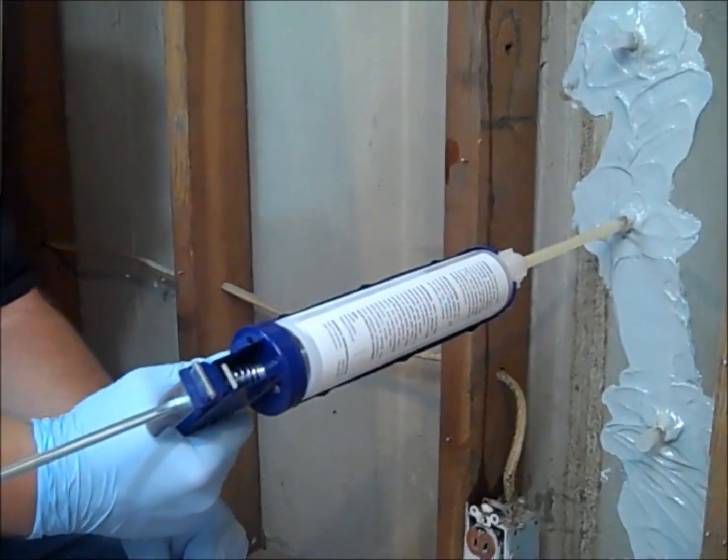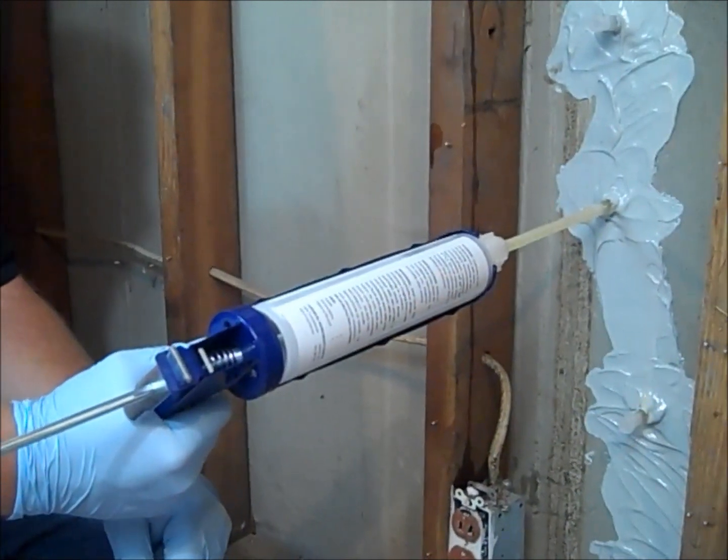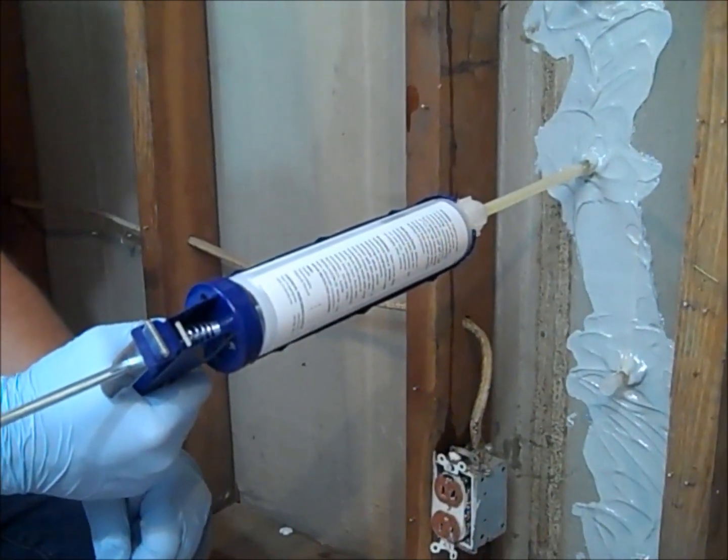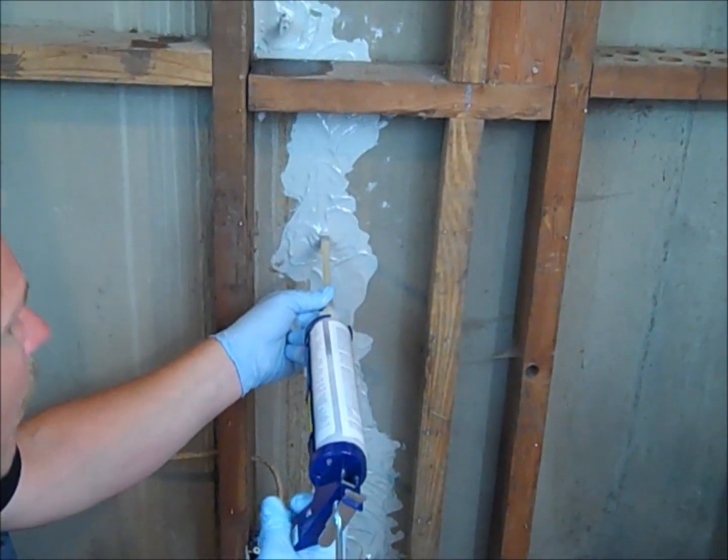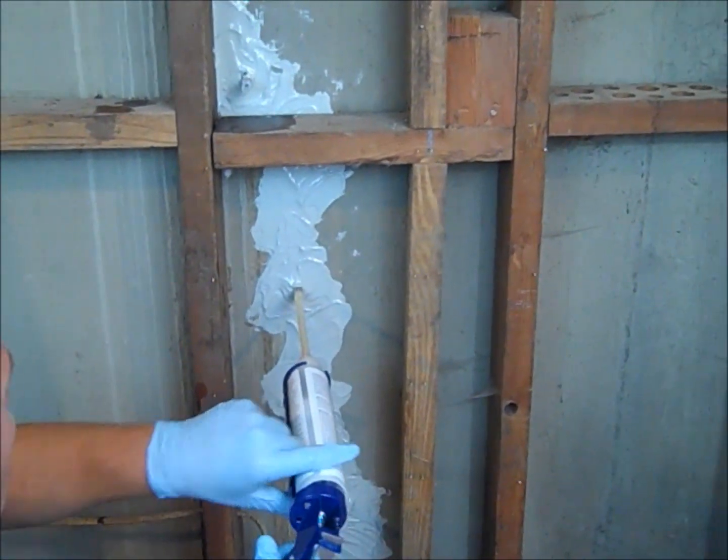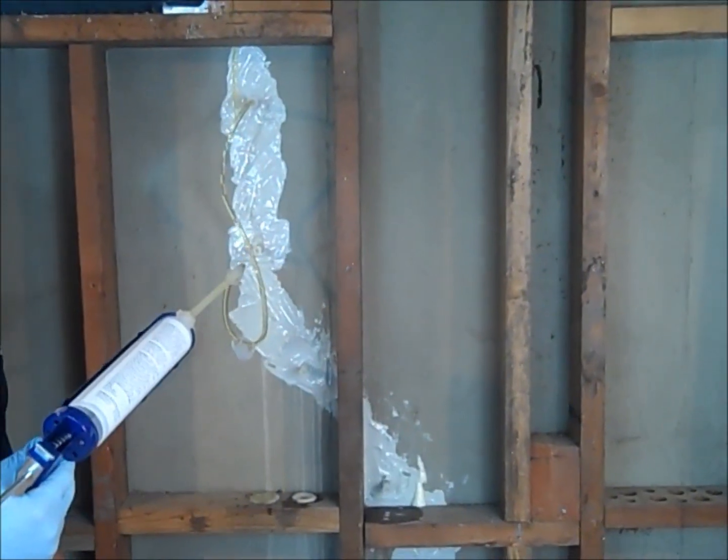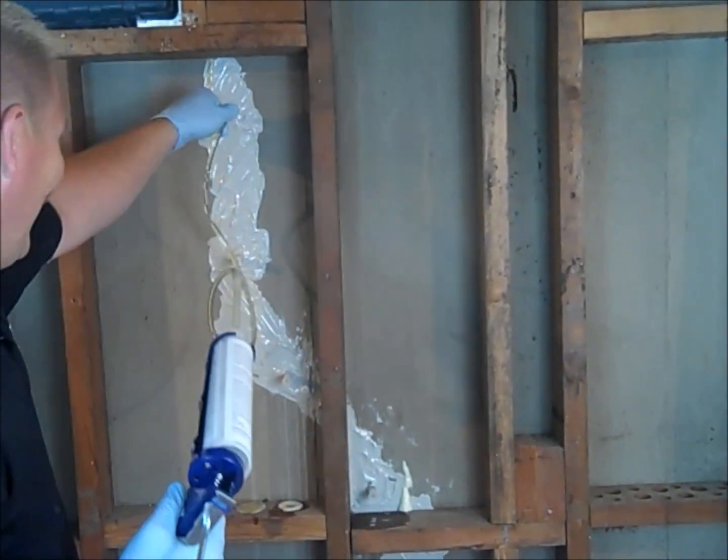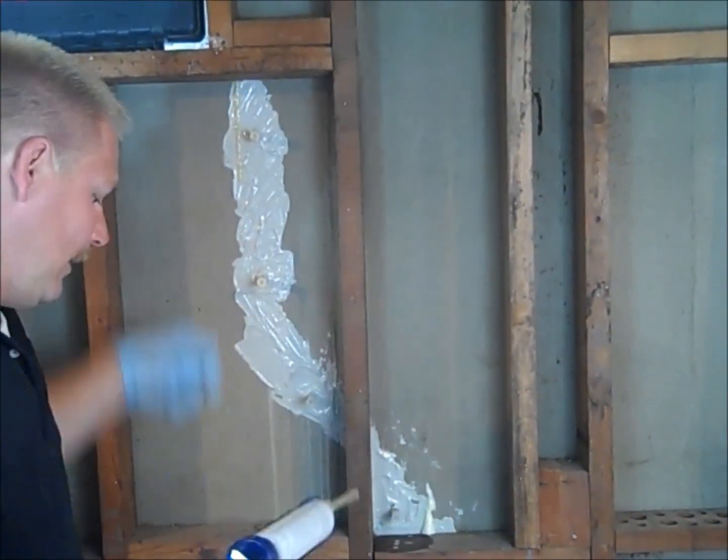12 to 24 hours after the injection, the epoxy paste and injection ports can be removed. Remove by chiseling or grinding. Also, the epoxy paste is paintable. You have successfully repaired your concrete crack. The concrete crack is now sealed from water penetration.